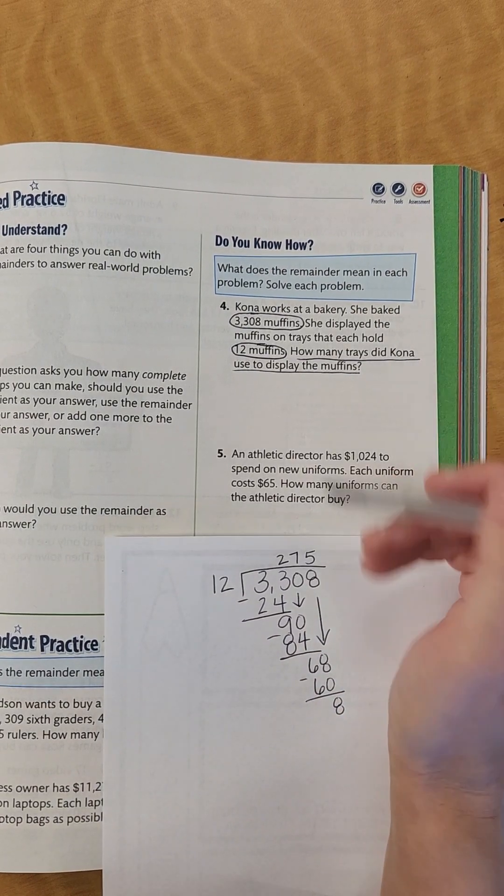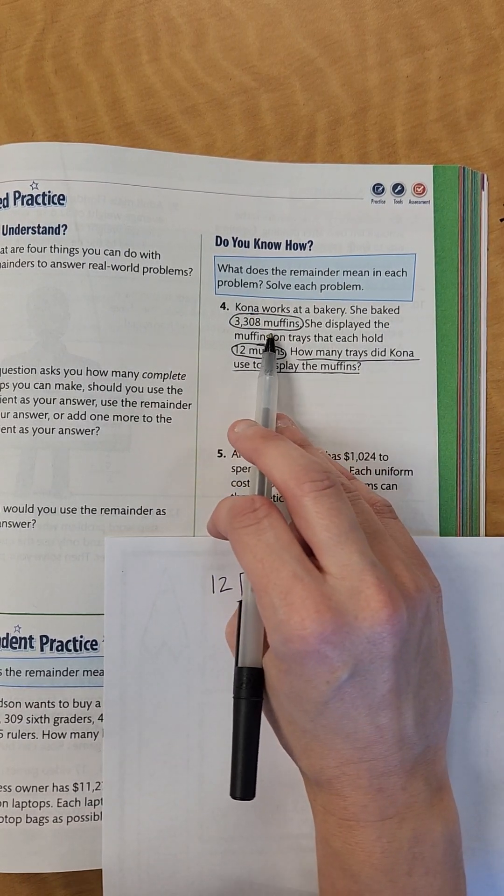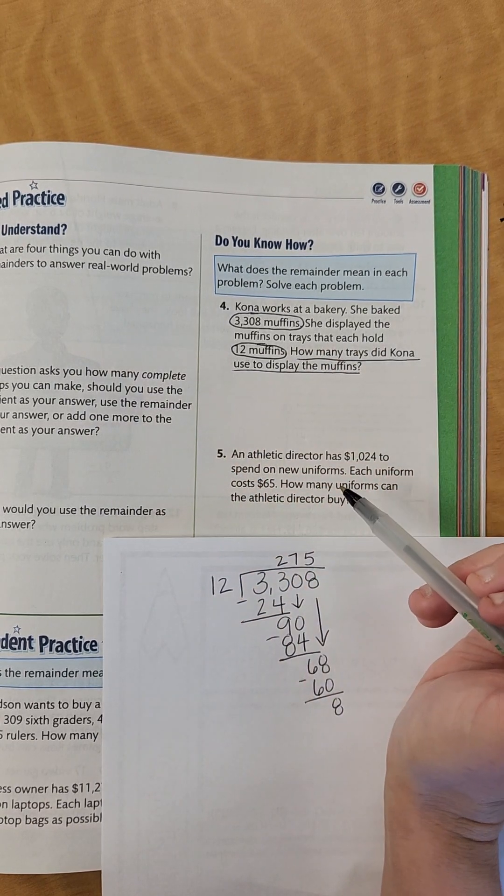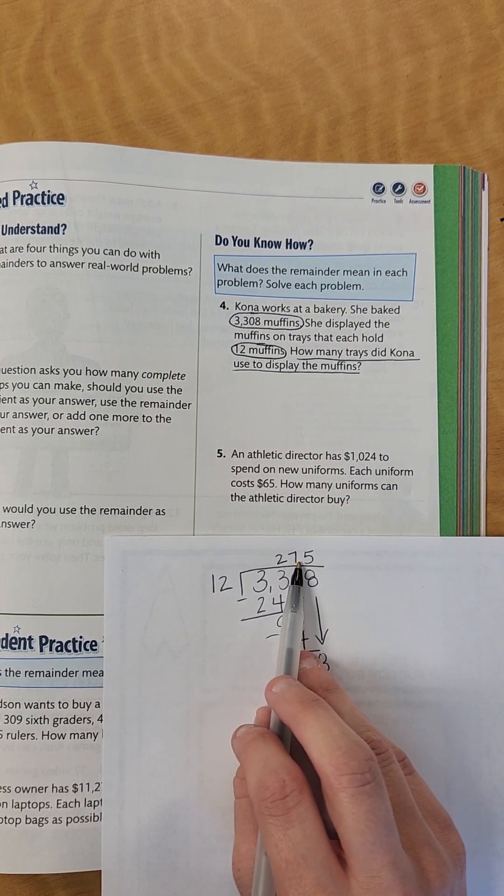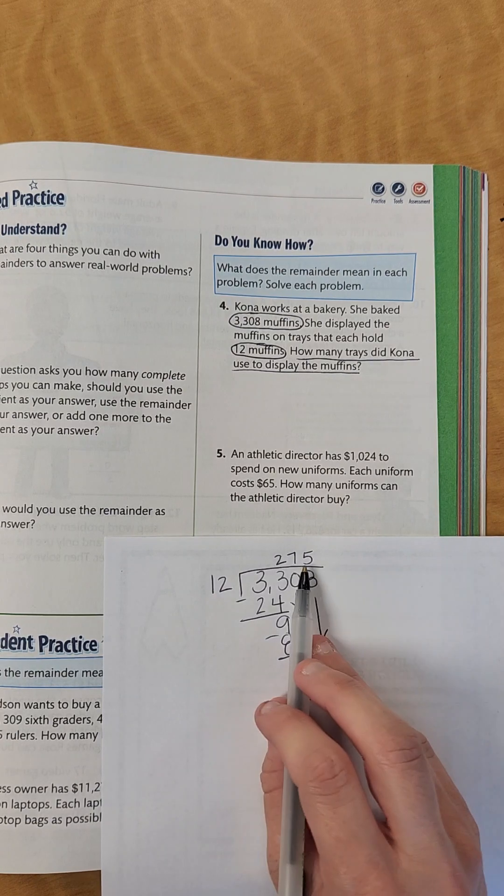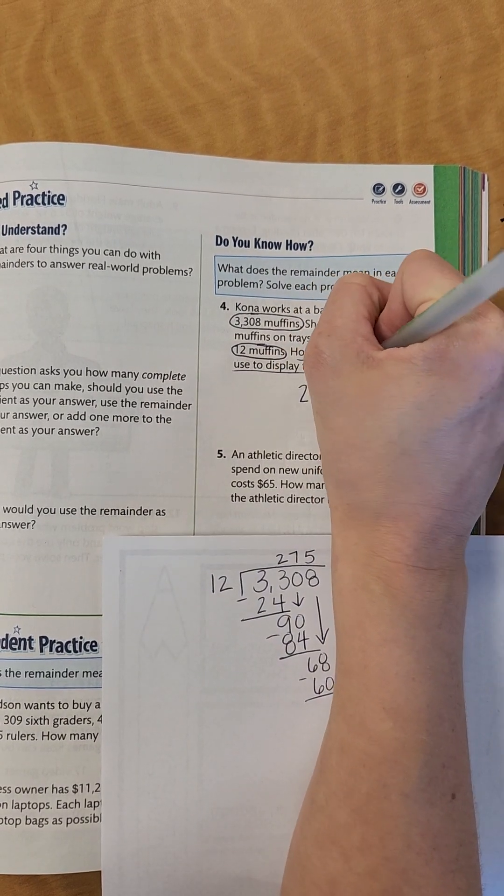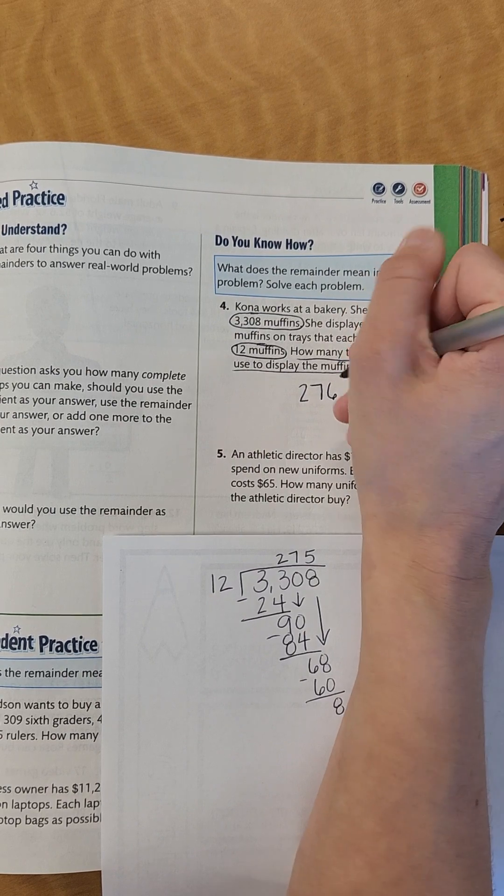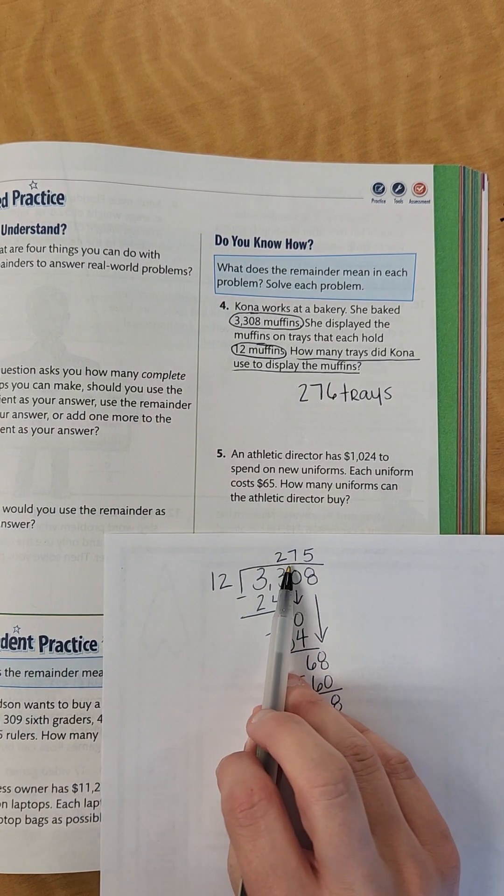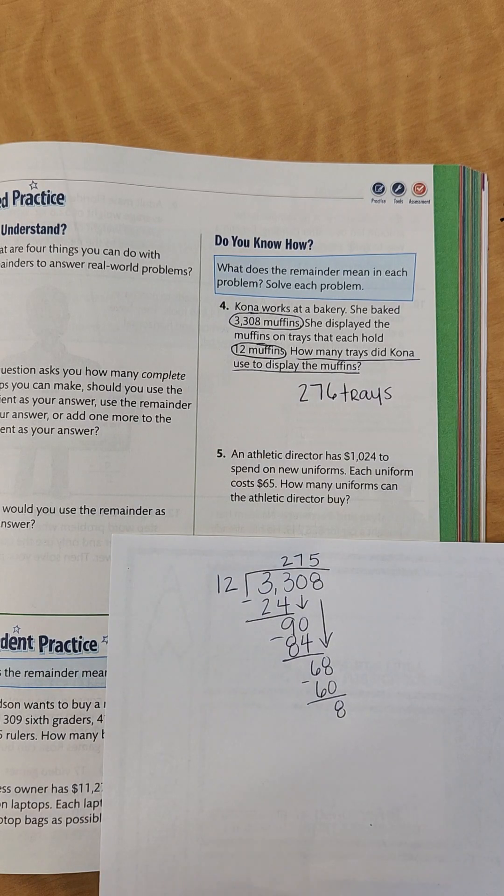Now, before we write down our answer, we've got to re-read her question. How many trays did she need to display the muffins? Well, 275 trays will evenly display this amount, but we also have these 8 extras. So we can't just have 275. We're going to have to add an additional tray. So we would need 276 trays. Because you need to be able to display all the muffins, not just the ones that are doing it evenly. You're going to need an extra tray.